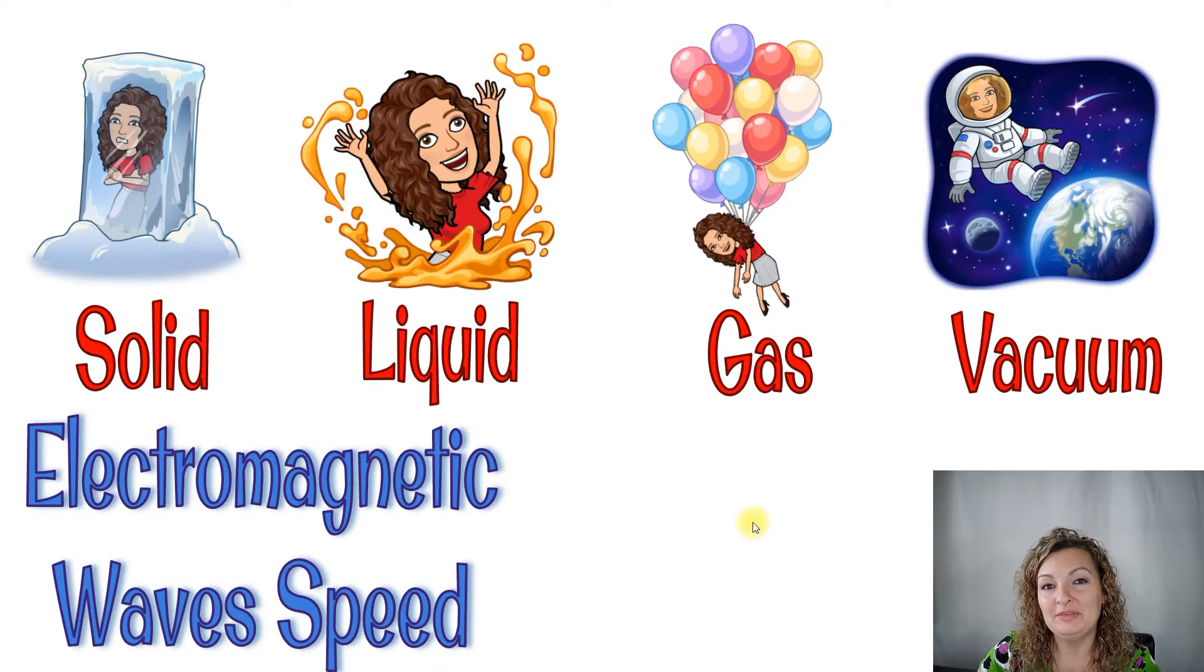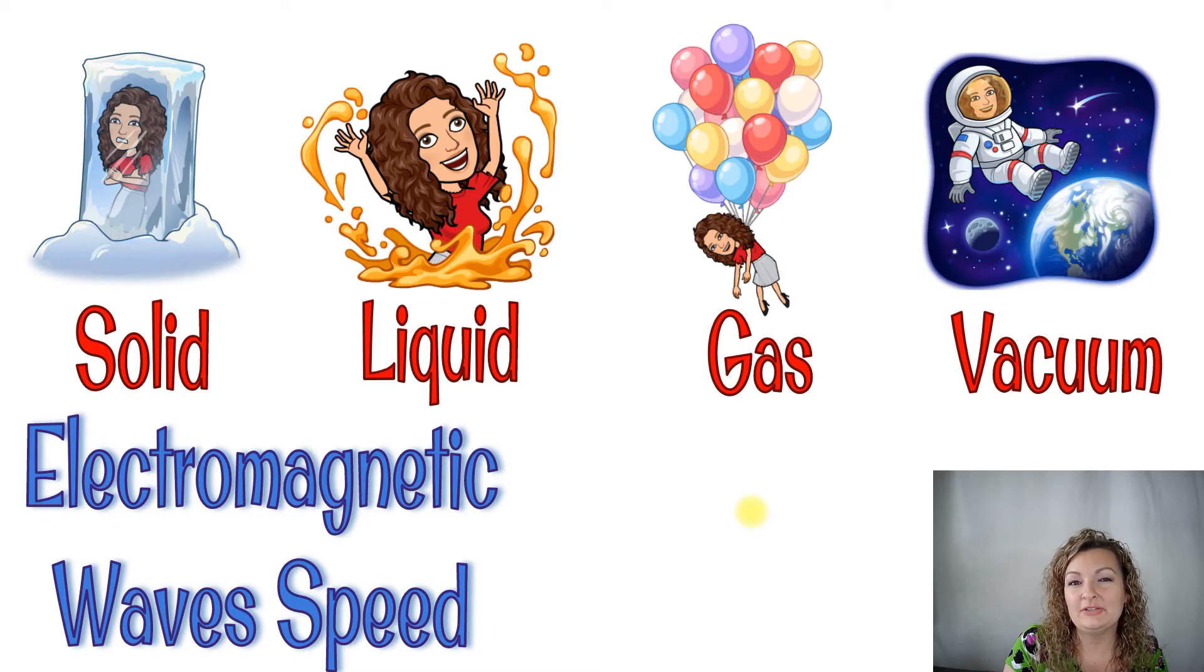Now you might be thinking, where do they travel the fastest, and where do they travel the slowest? So let's talk about that because they can go through anywhere because they do not require a medium. How a light wave works is it's going to go through the substance or vacuum for that matter, and it's going to be slowed down as it hits particles. The more particles we have, a little bit slower it's going to go because it has to maneuver in between each one of those particles in order to go through it.